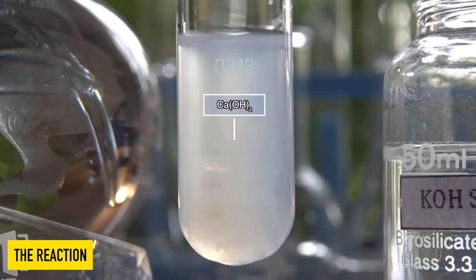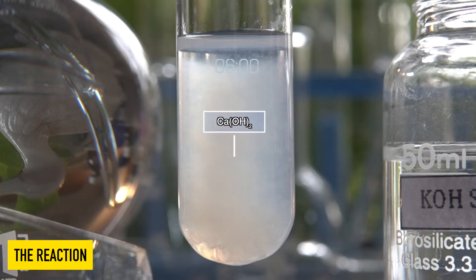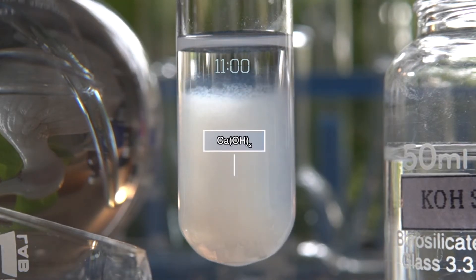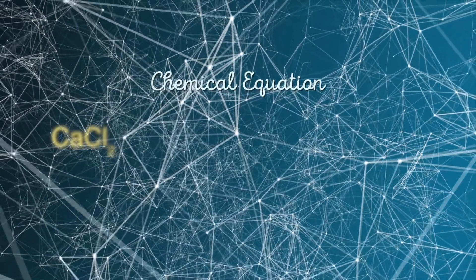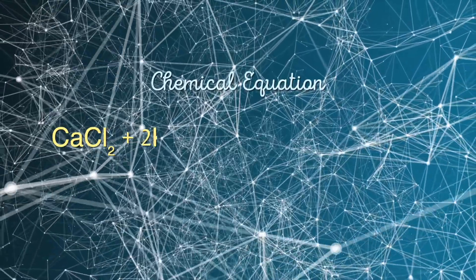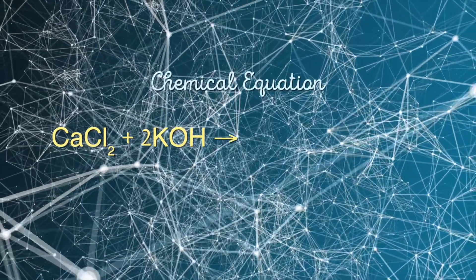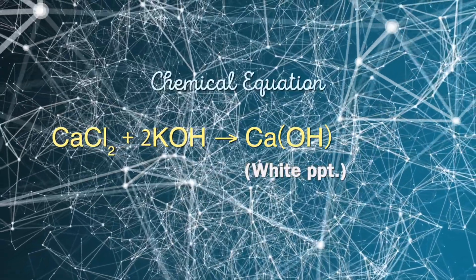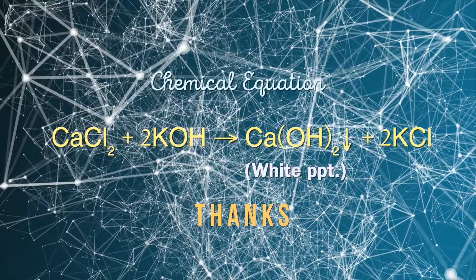This beautiful chemical reaction is a good example of a double displacement reaction. In this reaction, calcium chloride reacts with potassium hydroxide to produce a white precipitate of calcium hydroxide along with potassium chloride.